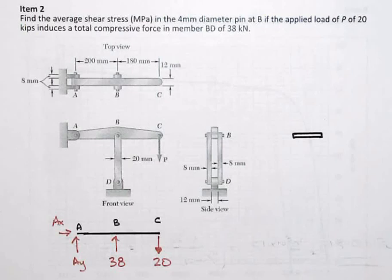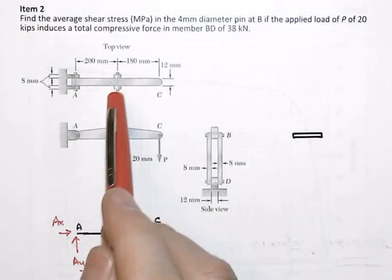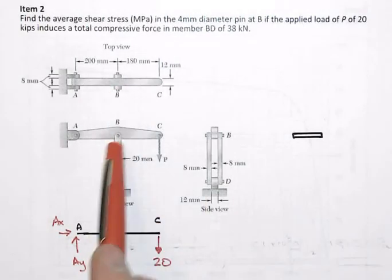In item 2 of the exam we're asked to find the average shear stress in the 4 millimeter diameter pin at B. That's right here in this top view, right there in our side view.